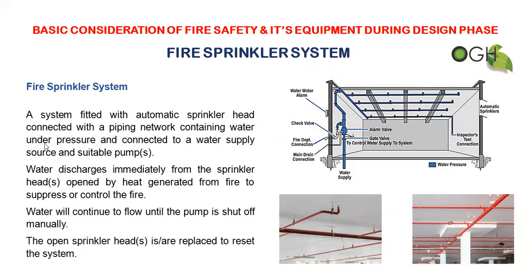A sprinkler system is fitted with automatic sprinklers connected with the piping network containing water under pressure and connected to a water supply source and suitable pumps. Water discharges immediately when the sprinkler is opened by heat generated from a fire to suppress or control the fire. Water continues to flow until the pump is shut off manually, then the open sprinkler head is replaced and the system is reset.